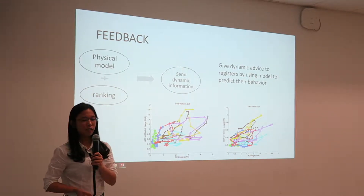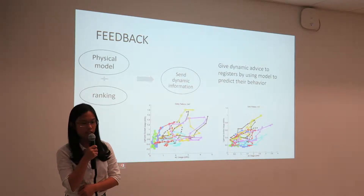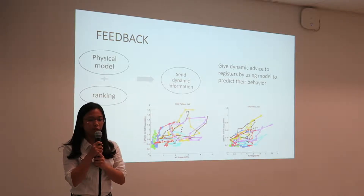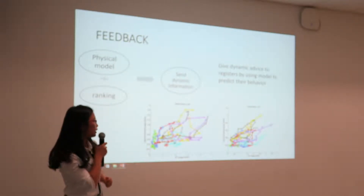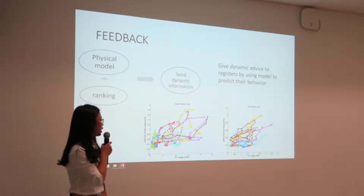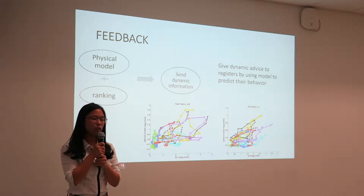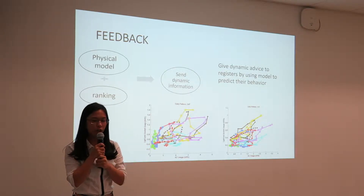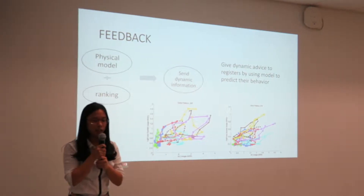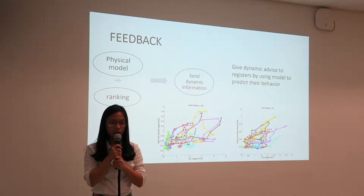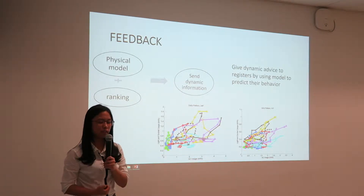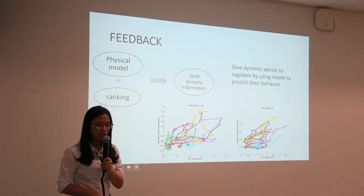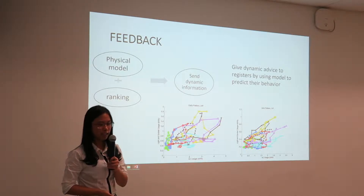We can also give feedback to individuals and design personalized advice. By adding all the details together, we can form a physical model. This physical model is predictable — as we saw in the previous slide, usage is cyclical — and therefore we can use this model to predict behavior in the near future and design personalized instructions sent by email. The ranking can also be included in the emails, telling residents their floor ranking this month. This may increase people's incentive to use less energy and achieve a higher rank, and it will also protect privacy.